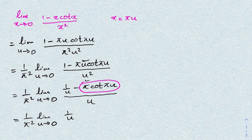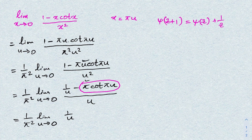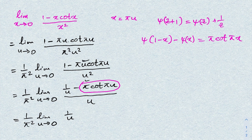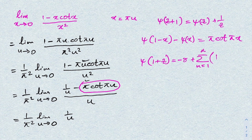Now I am going to use relations involving the digamma function. The recurrence relation is ψ(c+1) = ψ(c) + 1/c. The reflection formula is ψ(1−x) − ψ(x) = π·cotangent(π·x). And the series representation is ψ(1+c) = −γ + Σ(n=1 to ∞) of (1/n − 1/(n+c)).